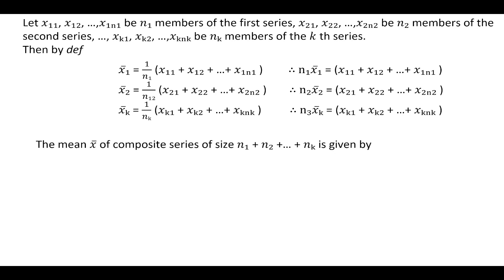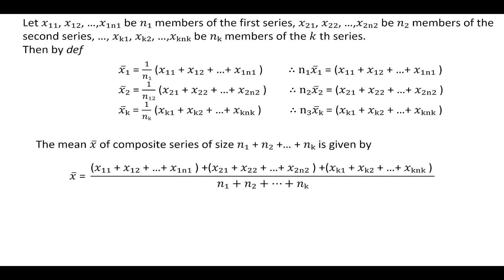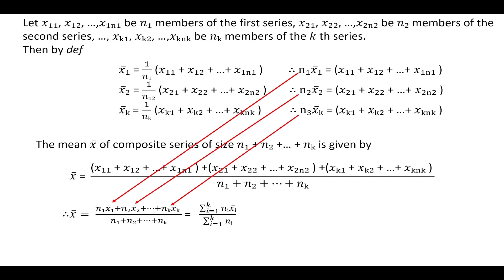The mean x̄ of the composite series is x̄ = (x11 + x12 + ... + x1n1 + x21 + x22 + ... + x2n2 + xk1 + xk2 + ... + xknk) divided by the total number of observations. We replace the bracketed values with n1 x̄1, n2 x̄2, ..., nk x̄k, giving x̄ = (n1 x̄1 + n2 x̄2 + ... + nk x̄k) / Σnᵢ, or equivalently Σᵢ₌₁ᵏ nᵢ x̄ᵢ / Σᵢ₌₁ᵏ nᵢ. This is the formula for the third property of arithmetic mean.